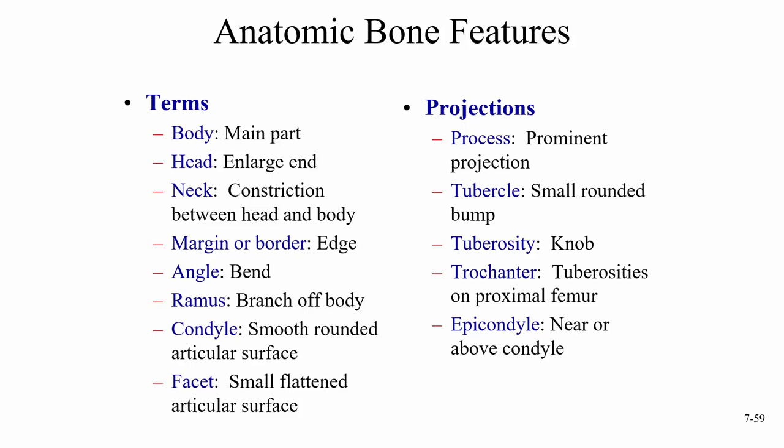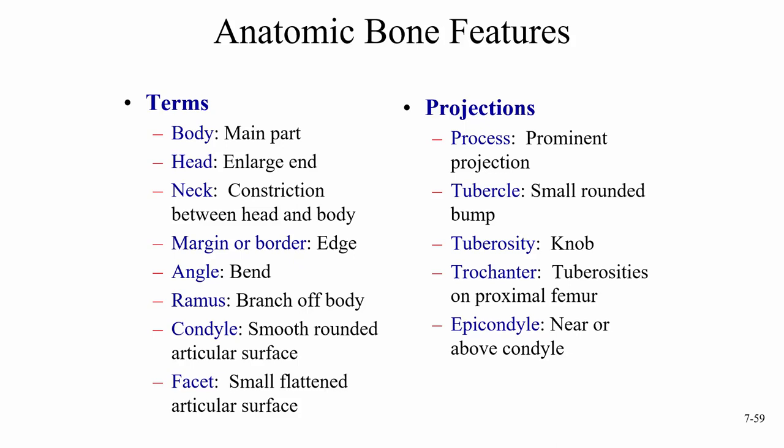Some of the terms you'll need to know: the body is the main part; the head is an enlarged end; the neck is a constriction between the head and body; a margin or border is an edge; an angle is a bend; a ramus is a branch off the body; a condyle is a smooth rounded articular surface; and a facet is a small flattened articular surface.